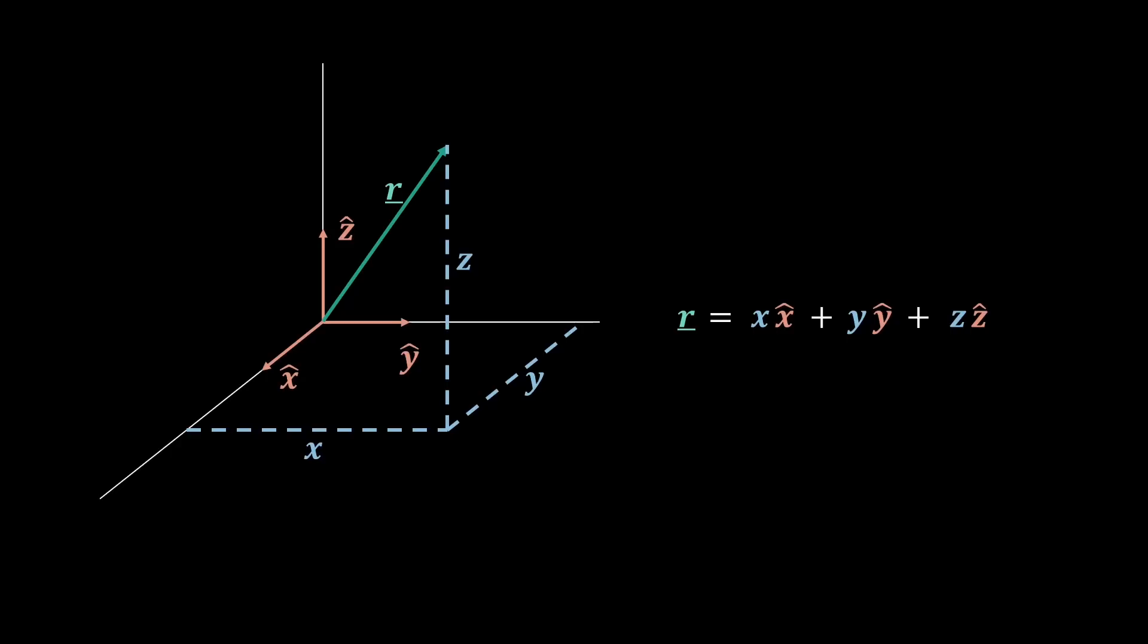Now that we've defined a vector, we're going to start to look at some of the operations we can perform. The first of these being scalar multiplication, by a constant alpha. If we do this, we find that the x, y and z components are all multiplied by alpha itself.